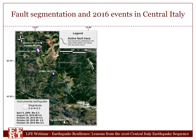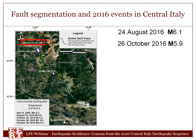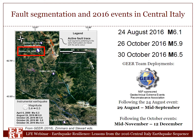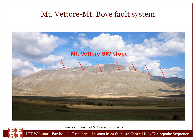Let's take a look at the area where this earthquake sequence occurred. On 24 August 2016, there was a magnitude 6.1 event not far from the town of Amatrice in central Italy. Then a few months after, on 26 October, there was another main shock, a 5.9 event. And then on 30 October 2016, there was an even stronger event with magnitude 6.5. The GEAR team deployed a reconnaissance mission between the end of August and mid-September following the 24 August event, and between mid-November and mid-December following the October events.